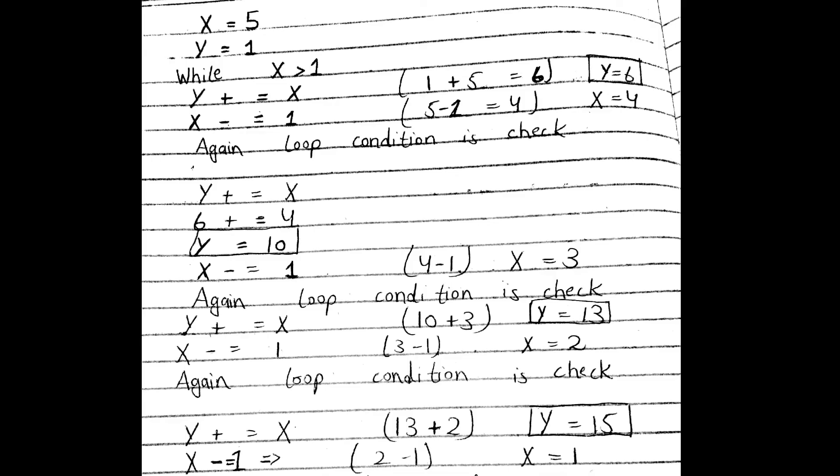Let's trace through the loop. The condition is: while x > 1. At the start of the loop, x has a value of 5. Since 5 > 1, the condition is true, so we enter the loop.